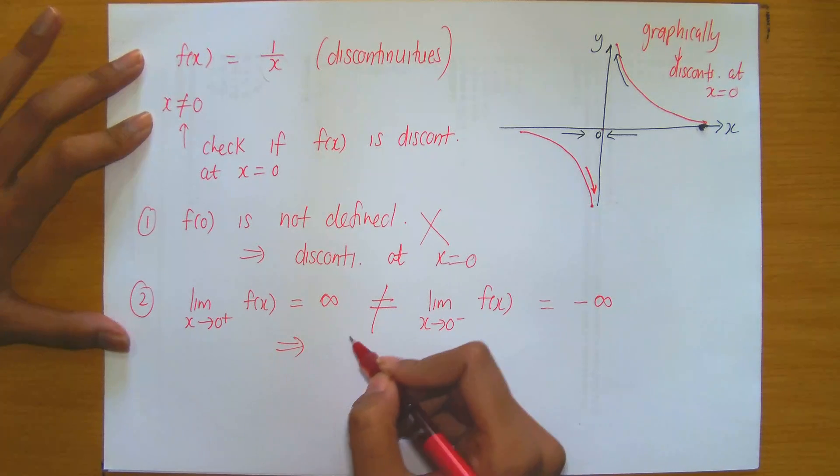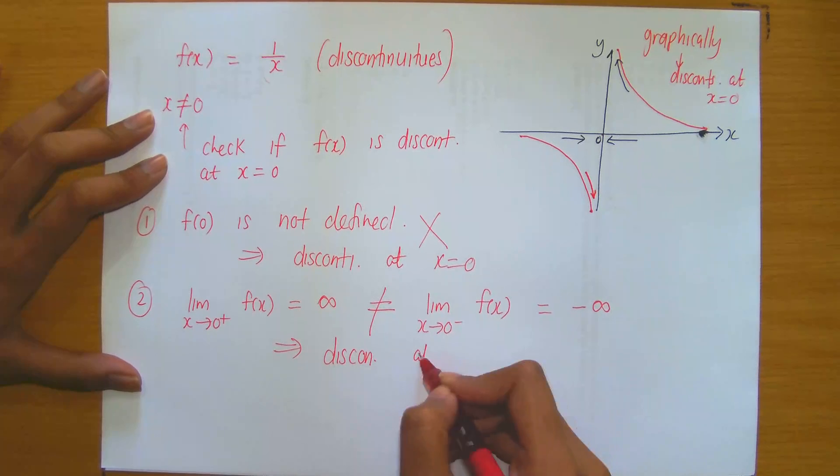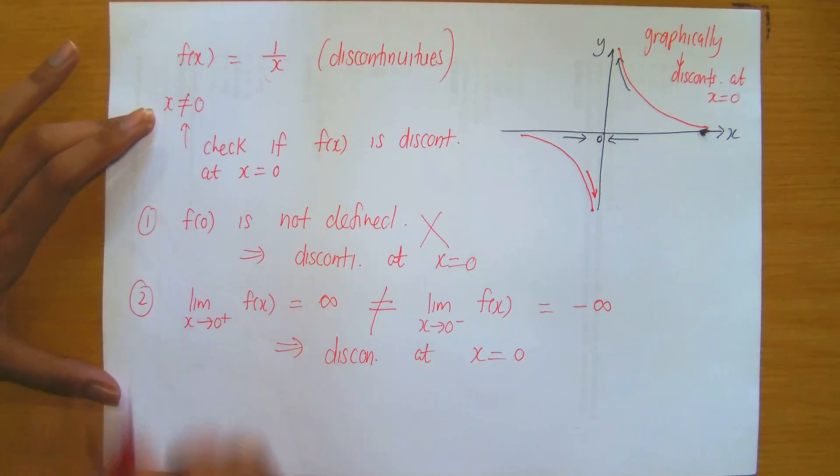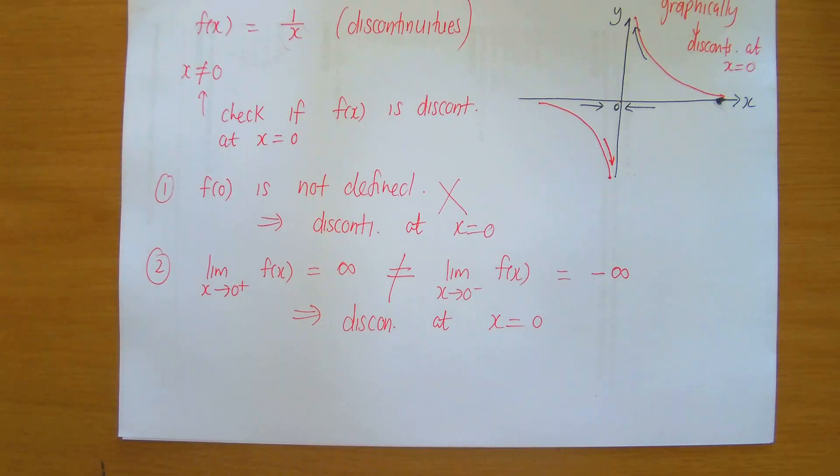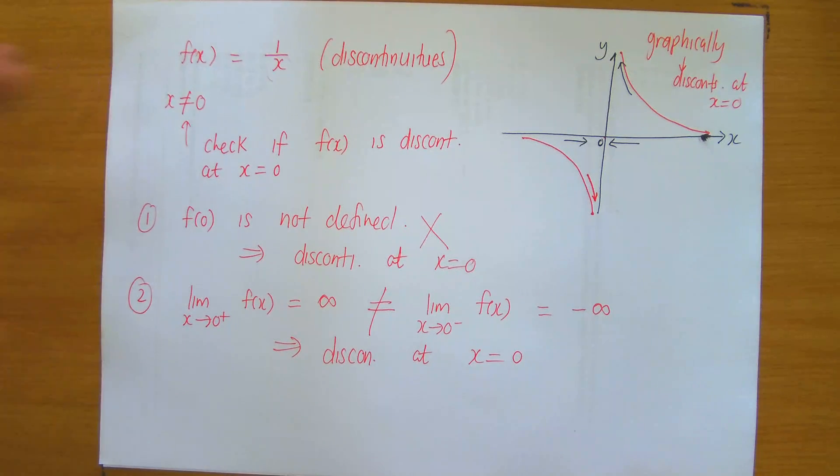As a result, once again, if you hadn't checked 1, but you checked 2, you would immediately conclude that it's discontinuous at x equals 0. And then, of course, because we've gotten these conclusions for 1 and 2, 3 will also not hold. This is just an example for you to check,